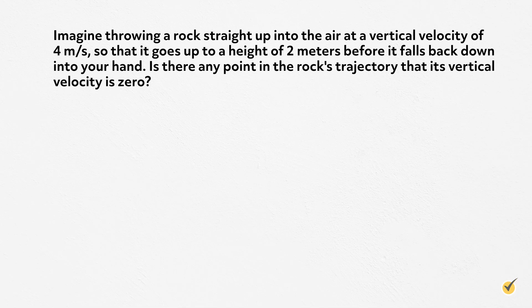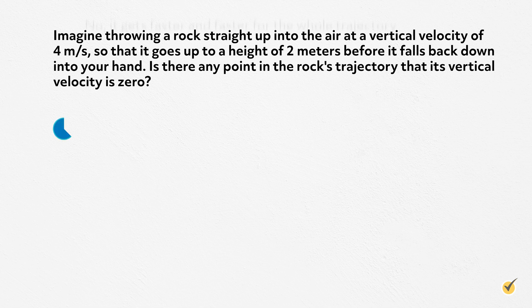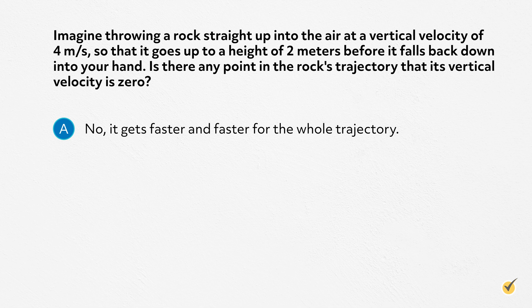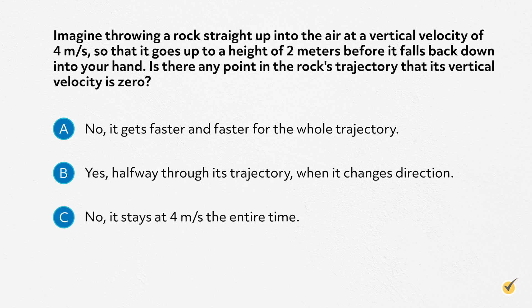Now that we've gone through a thorough overview of projectile motion, let's test your knowledge with a few practice problems. Number 1. Imagine throwing a rock straight up into the air at a vertical velocity of 4 meters per second, so that it goes up to a height of 2 meters before it falls back down into your hand. Is there any point in the rock's trajectory that its vertical velocity is 0? A. No, it gets faster and faster for the whole trajectory. B. Yes, halfway through its trajectory when it changes directions. C. No, it stays at 4 meters per second the entire time.